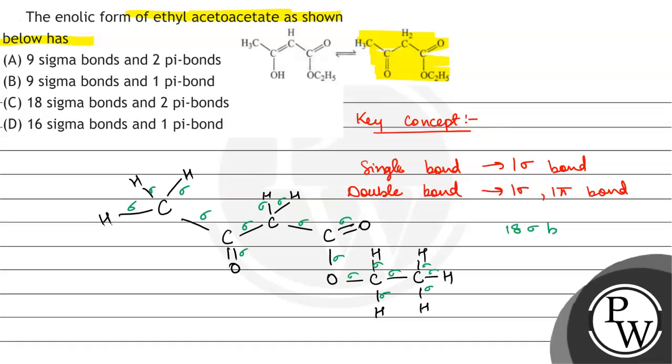Then pi bonds: 1, 2, so 2 pi bonds. The correct option will be option C. Hope you all understood it well, best of luck.